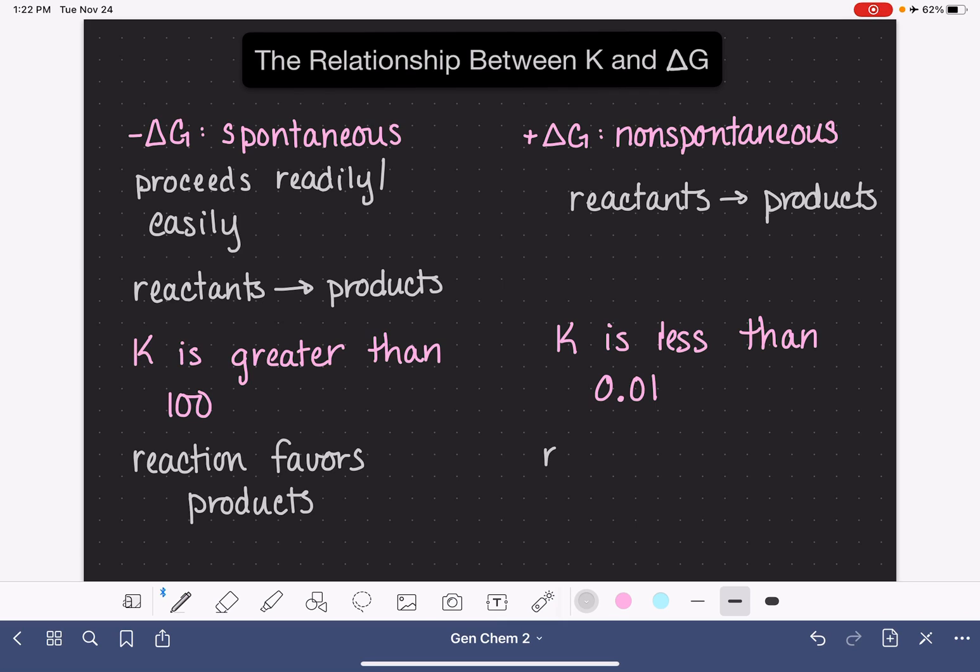And in words, we would describe this as a reaction that favors the reactants, meaning that it prefers to stay on the left side of the arrow. We don't see the reactants being converted into products.